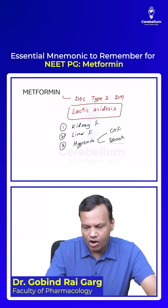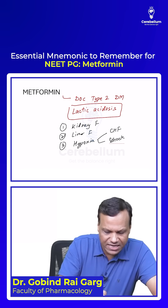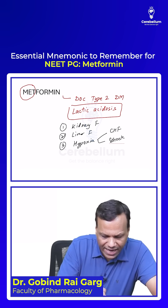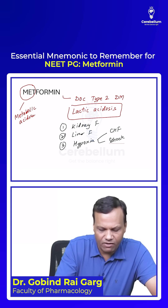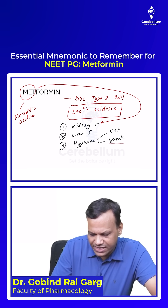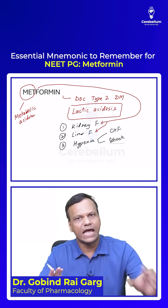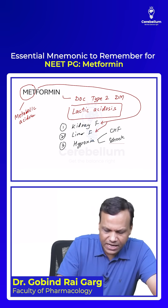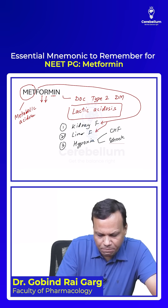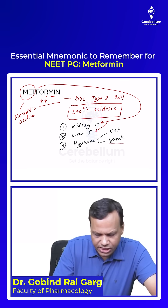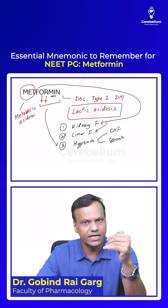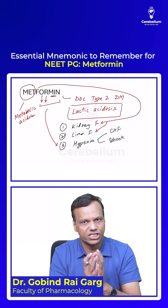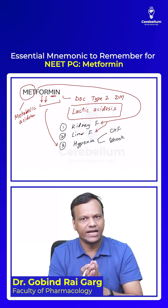So how to remember? The mnemonic is metformin itself. It says it will cause metabolic acidosis — that means lactic acidosis. 'M' stands for metabolic acidosis. 'F' means failure — liver failure or kidney failure. And 'O' means oxygen reaching the tissues is minimum, meaning predisposed to hypoxia. So the three important contraindications are kidney failure, liver failure, and predisposed to hypoxia like CHF and shock.